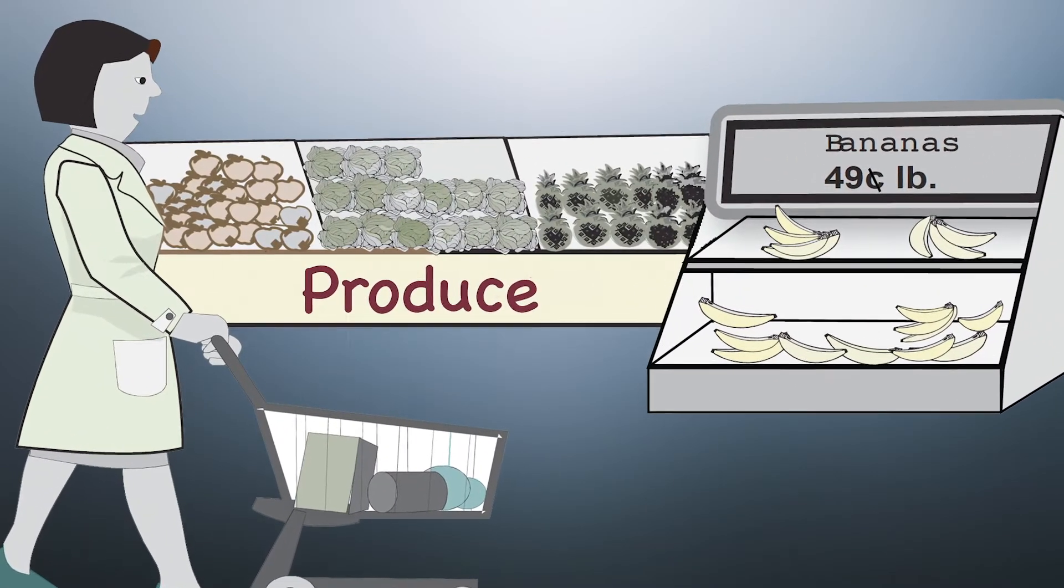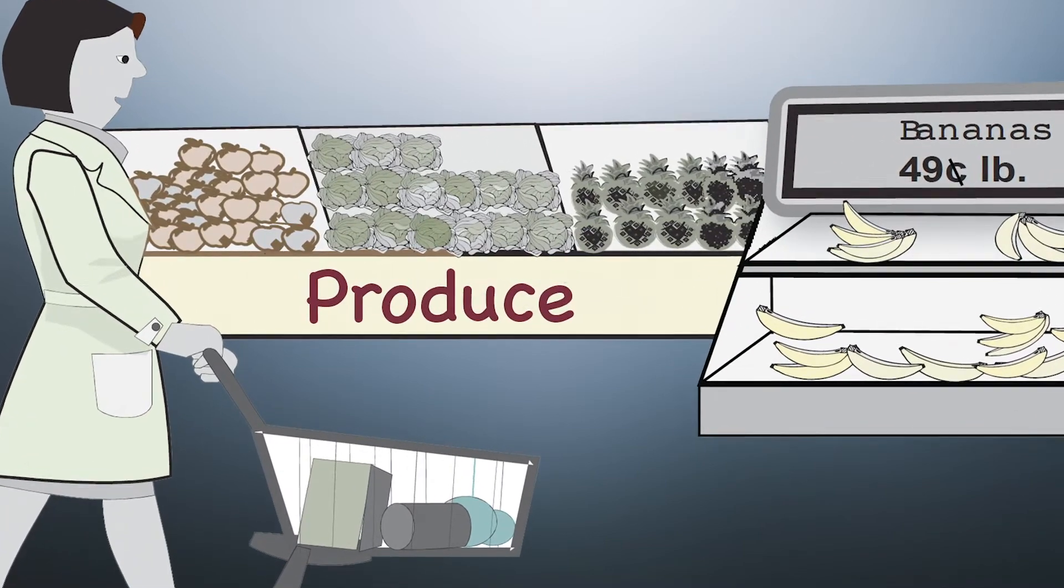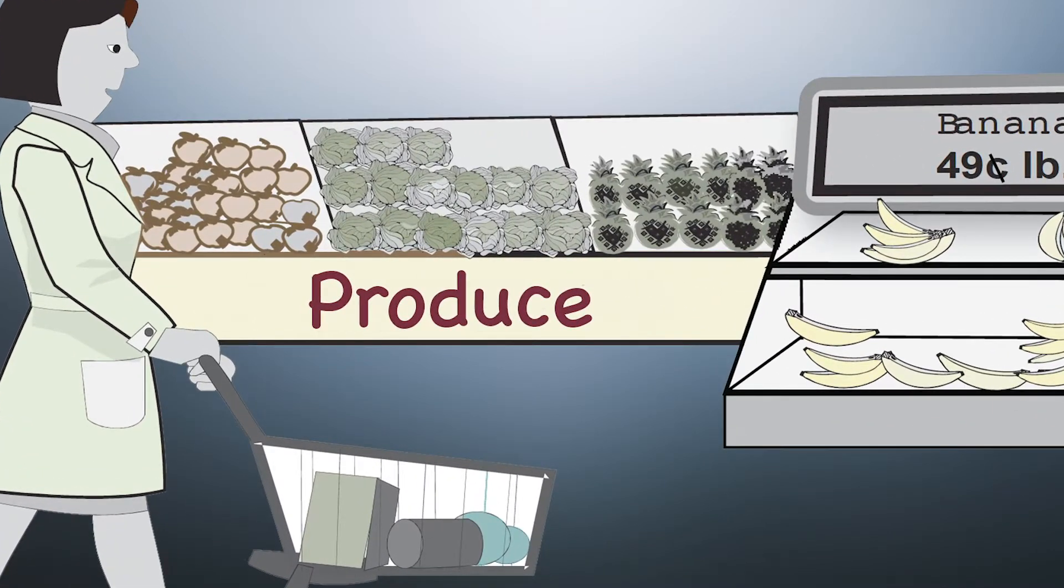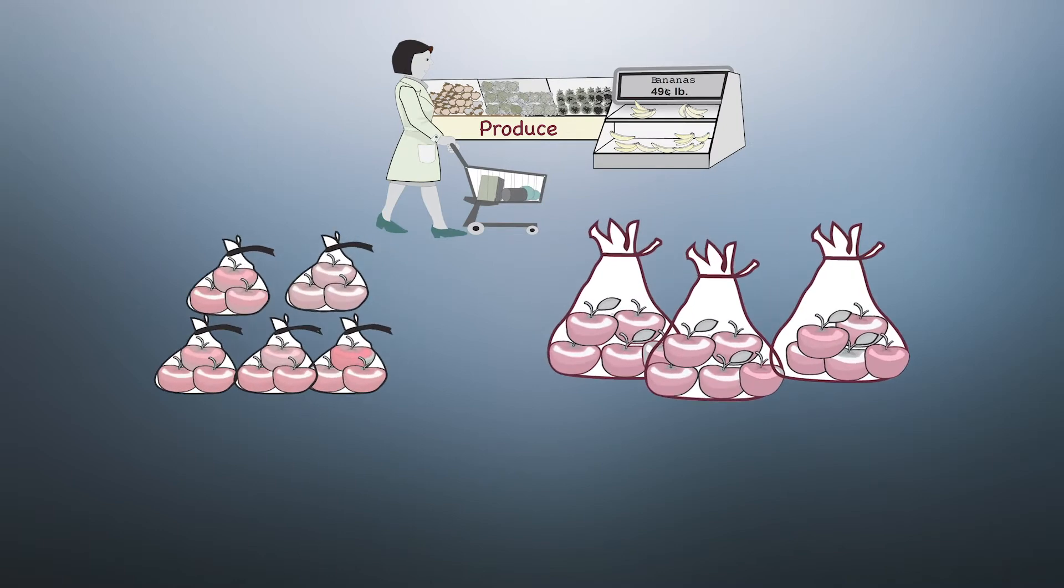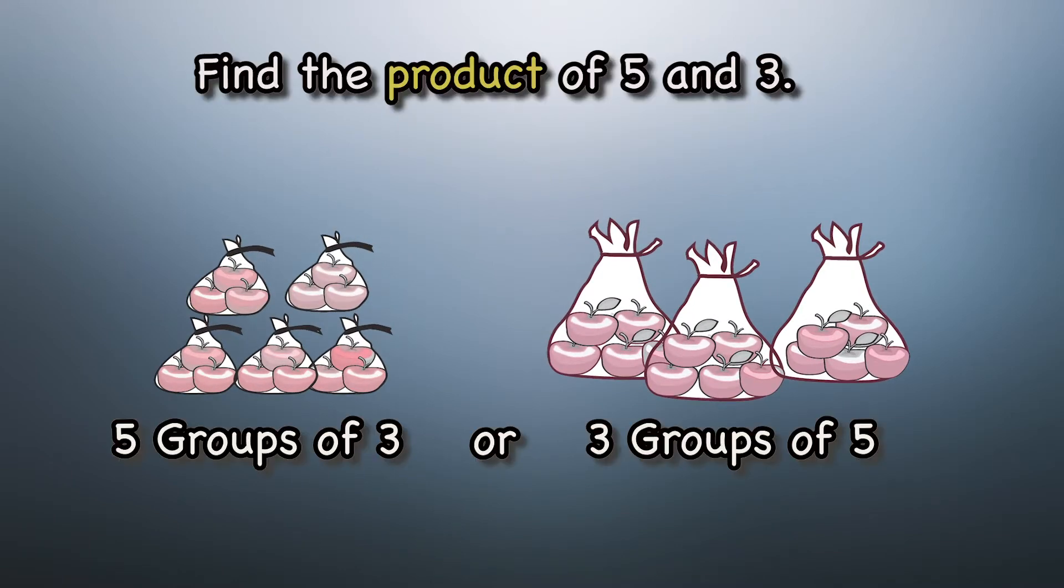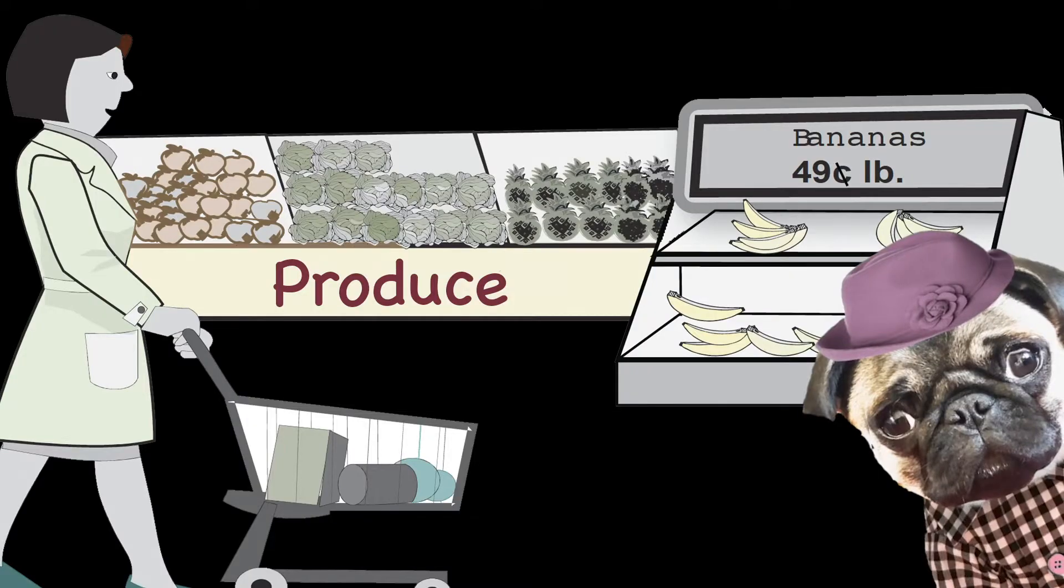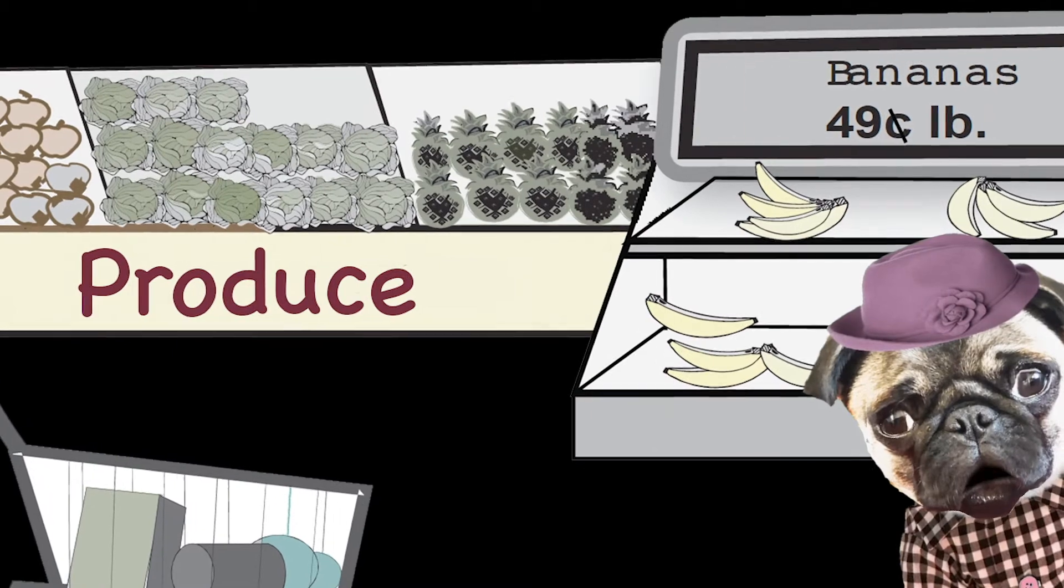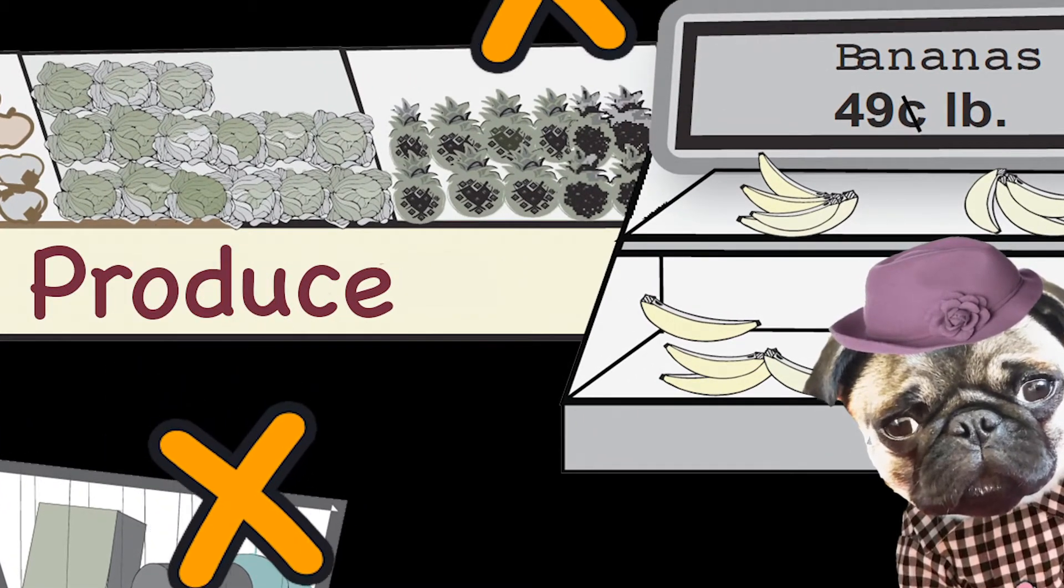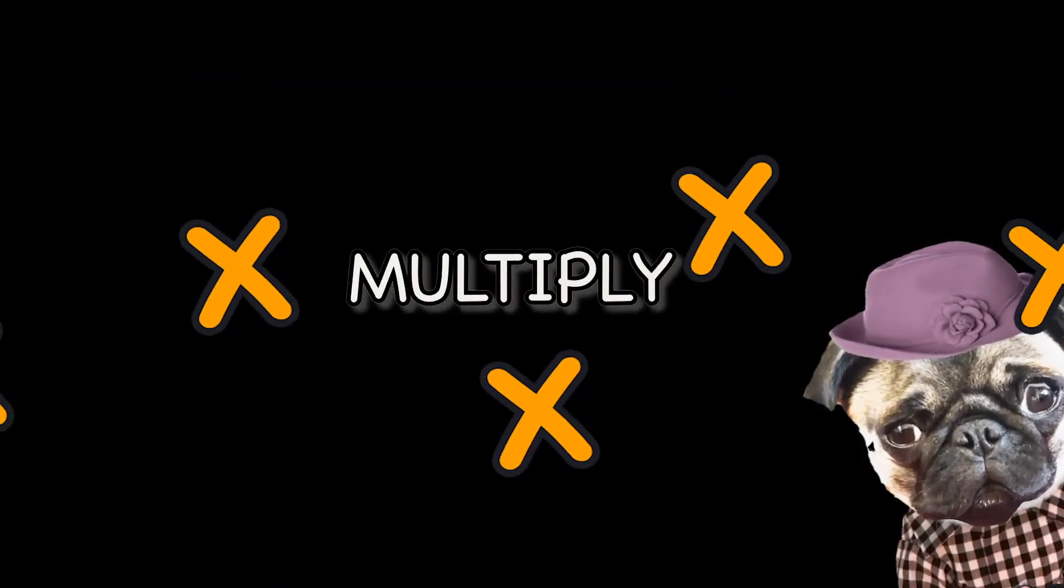The produce section of a grocery store is where fruits and vegetables are kept. Produce is often bought in groups, just like multiplying is grouping numbers together. So when you hear the word product, think of produce at the grocery store, and remember that you will need to multiply.